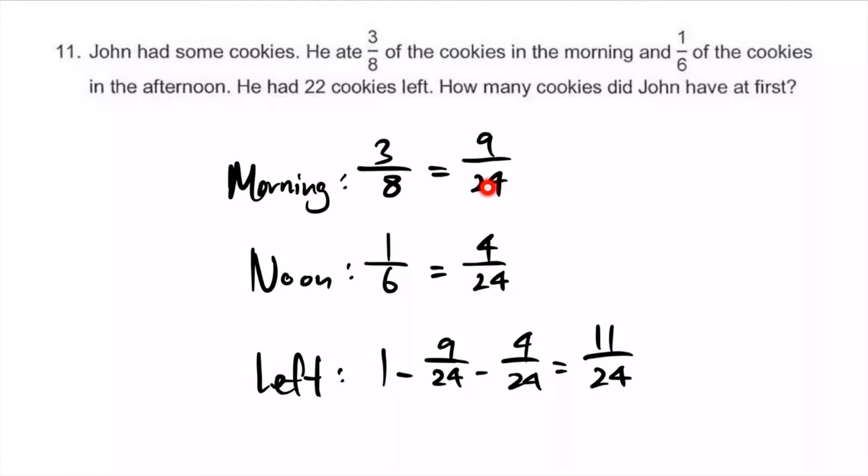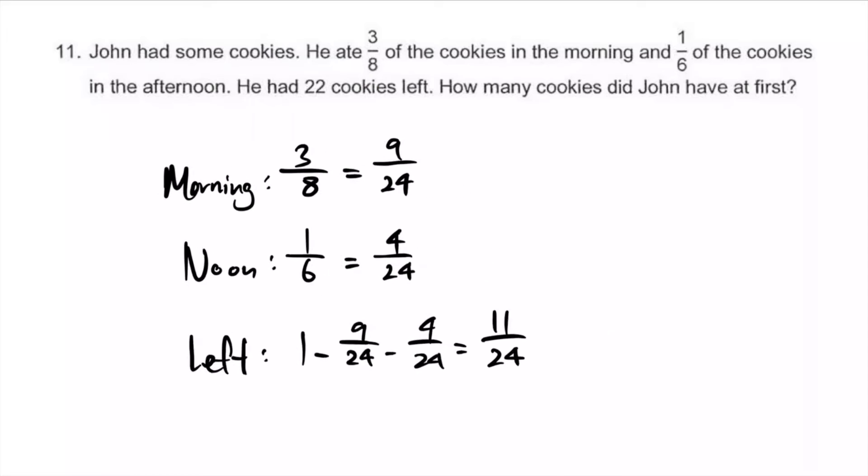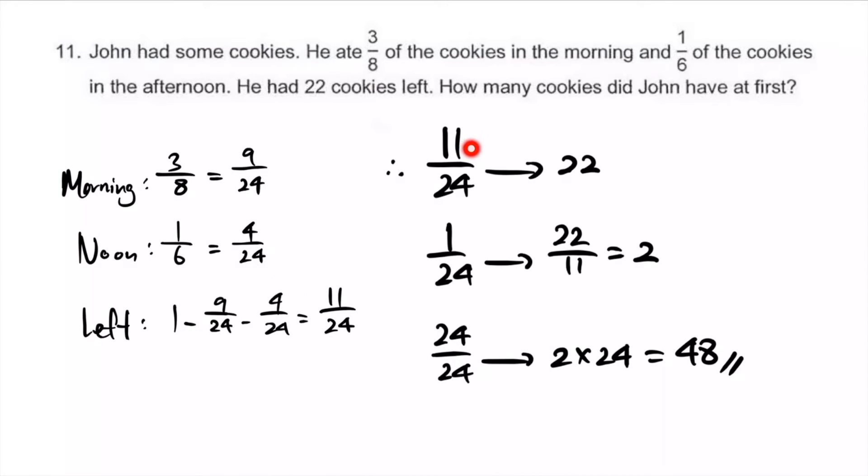The morning 3/8, let's turn that to 9/24 - times 3 times 3. Afternoon 1/6, get the denominator to be 24, so times 4 times 4. What's the fraction left? 1 whole minus 9/24 minus 4/24 equals 11/24. We're told these 11 units represent 22 real cookies. We can form an equation: 11 units equals 22 cookies, so 1 unit equals 2 cookies. How many did he have at first? We're interested in 1 whole, that's 24 units. So 2 times 24 is 48.